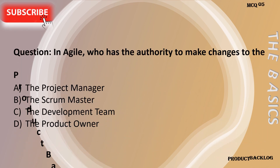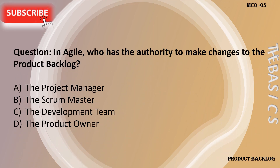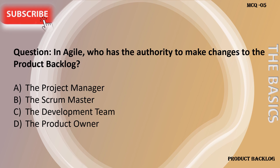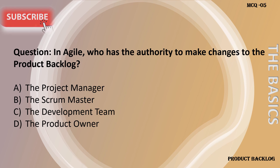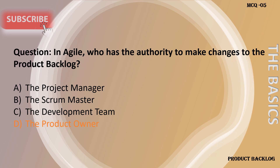In Agile, who has the authority to make changes to the product backlog? A. The project manager. B. The scrum master. C. The development team. D. The product owner. The answer is the product owner.